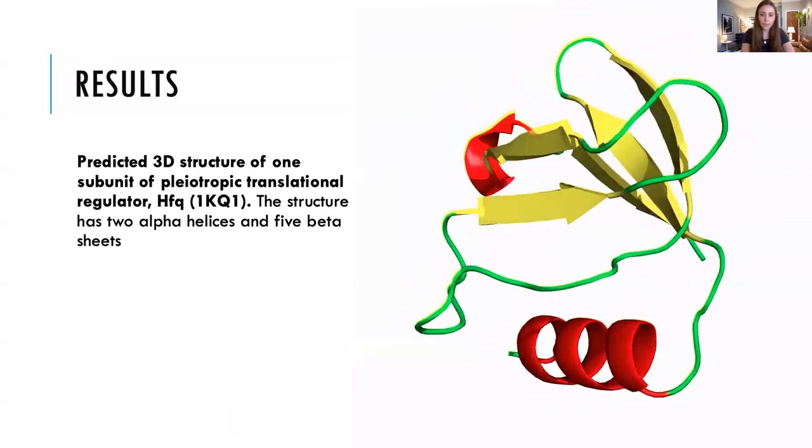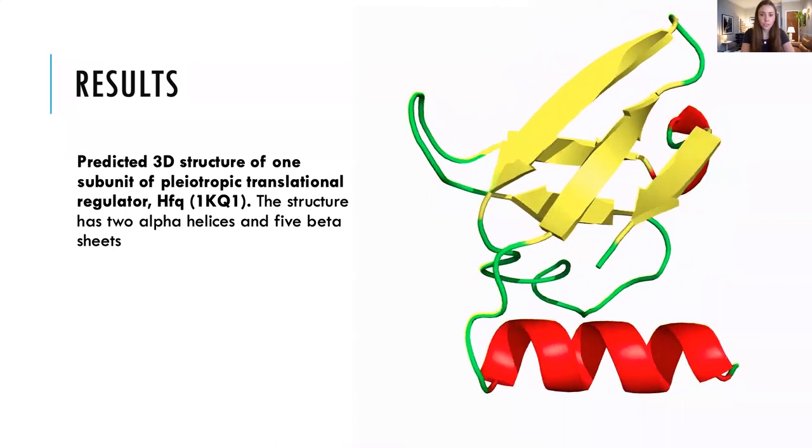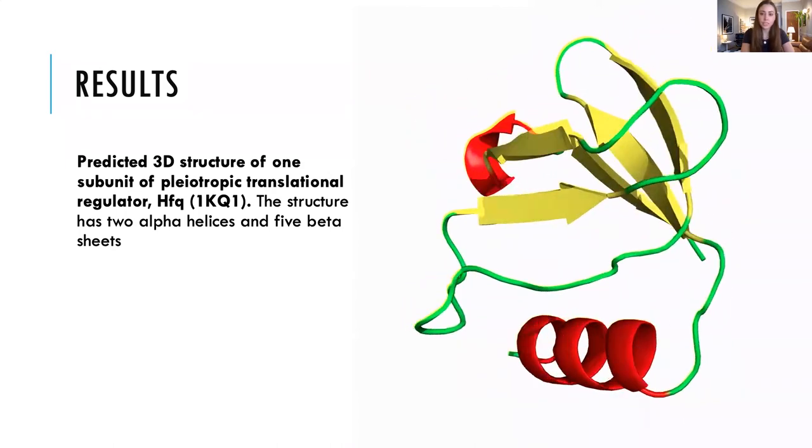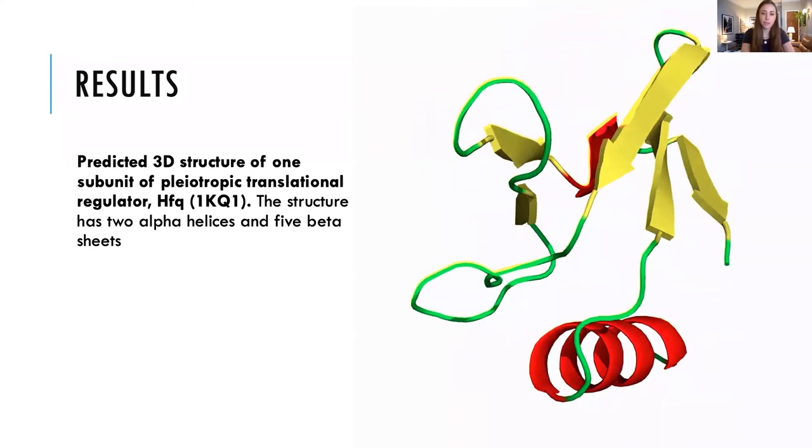The result displays a subunit of the HFQ protein that we chose. Each subunit has two alpha helices and five beta sheets. The protein is a homotetramer, which means that there are four identical subunits.